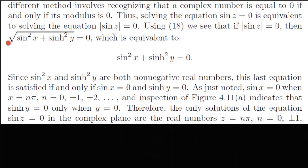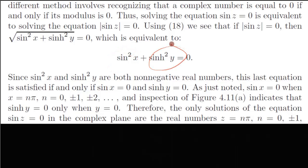The modulus of sin(z) equals the square root of sin²(x) + sinh²(y). Setting this equal to zero: since both terms are positive, sin²(x) equals zero giving x equal to nπ, and sinh²(y) equals zero giving y equal to zero. sinh(y) equals zero only when y equals zero.